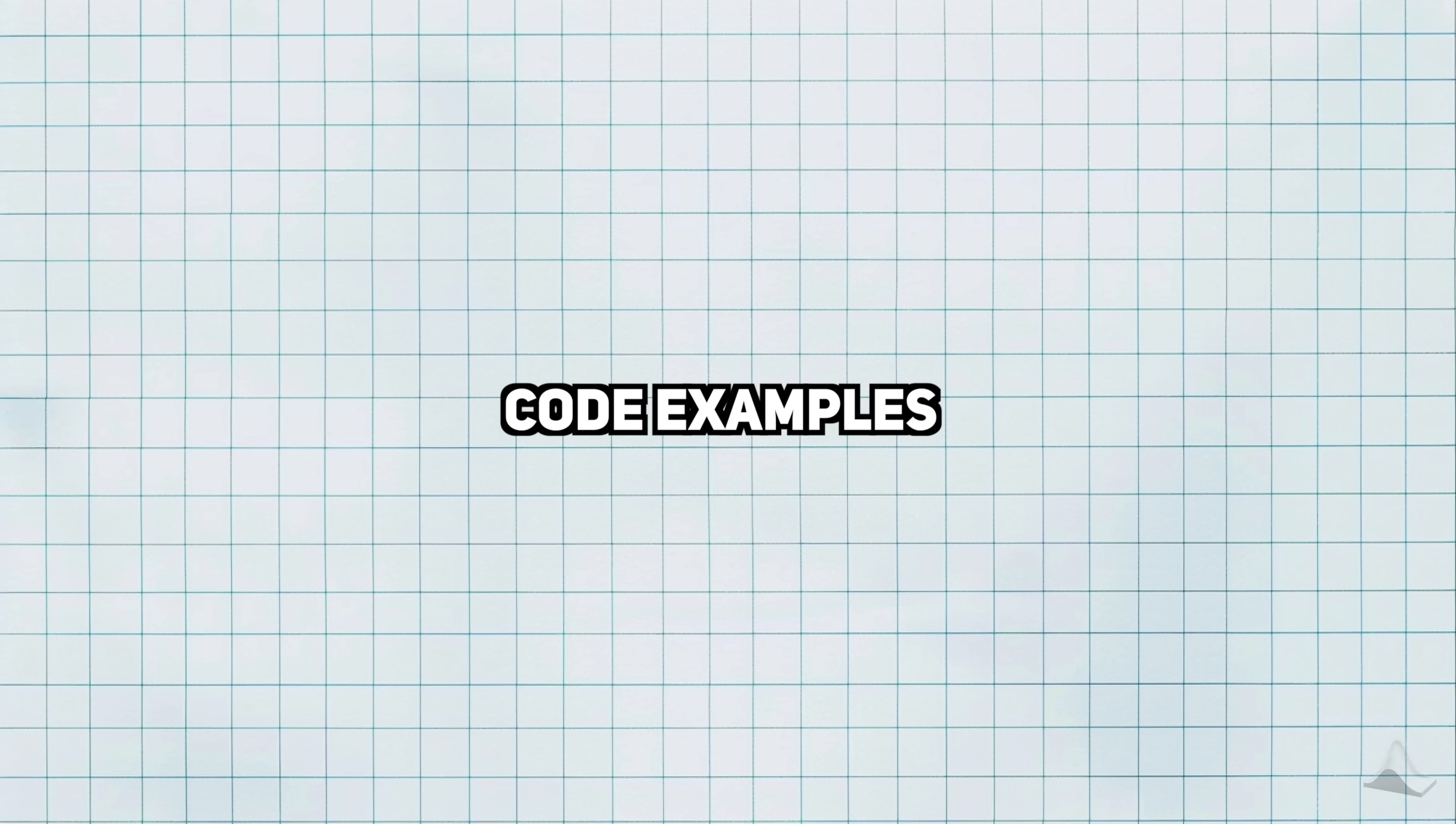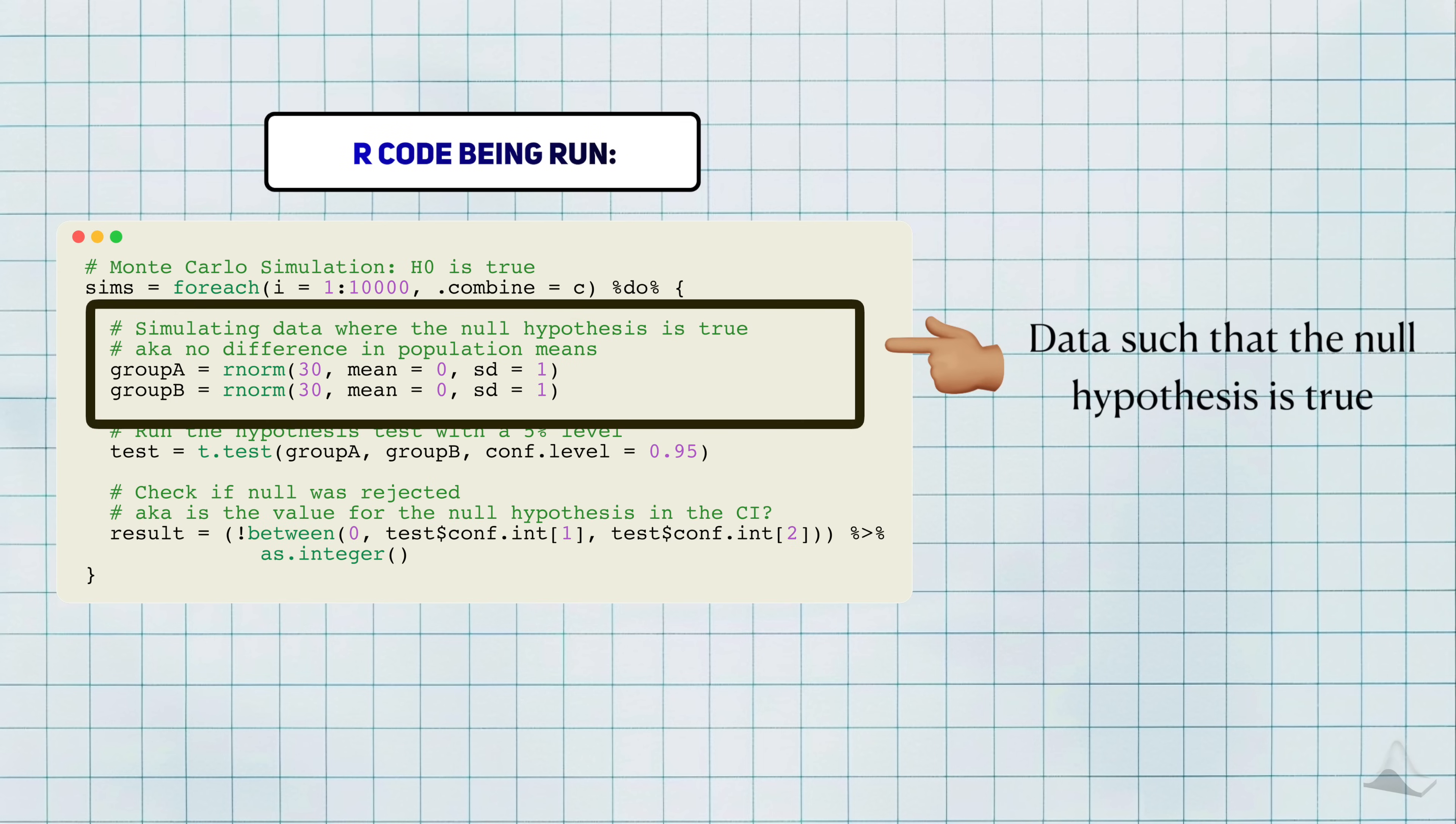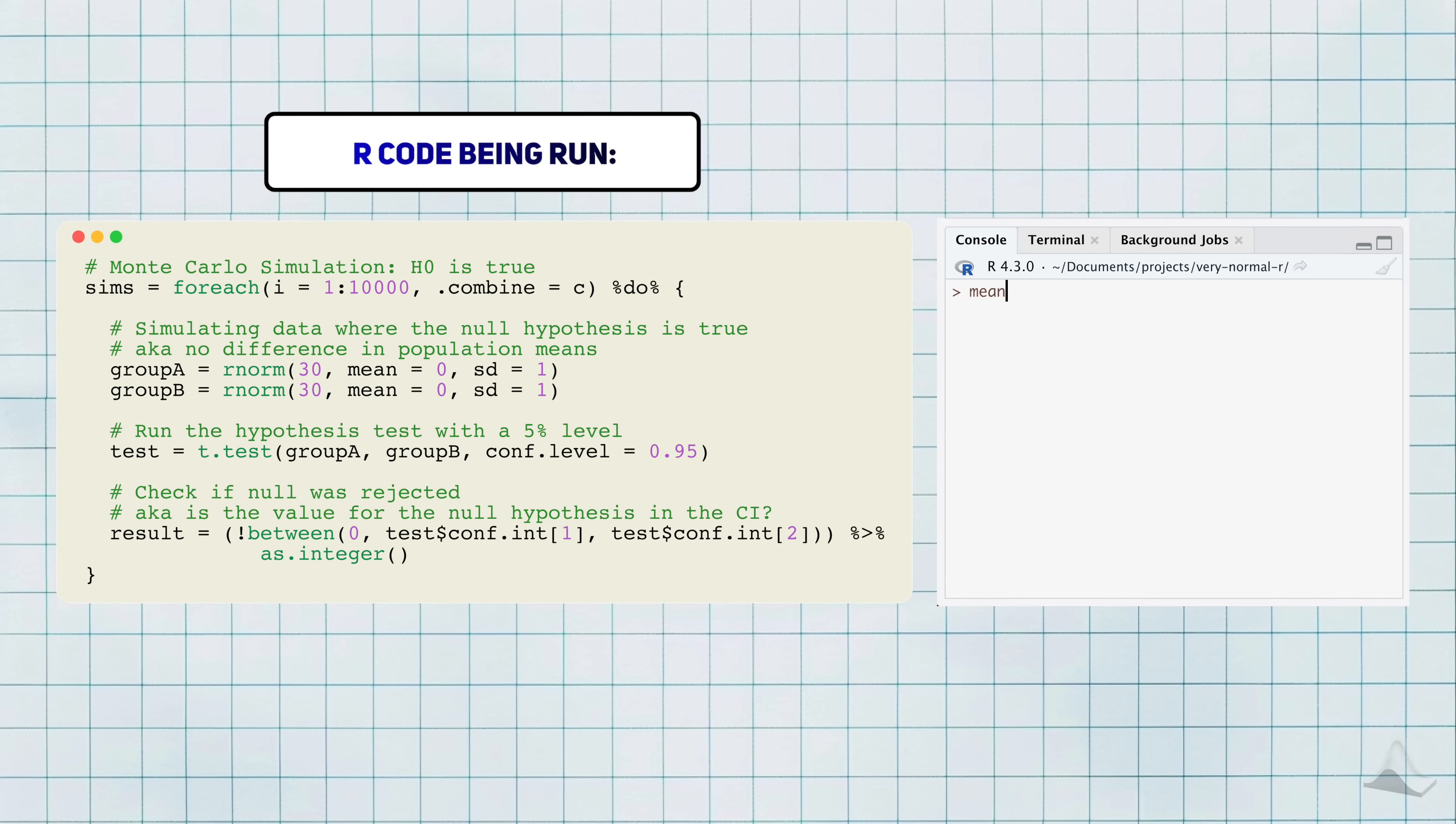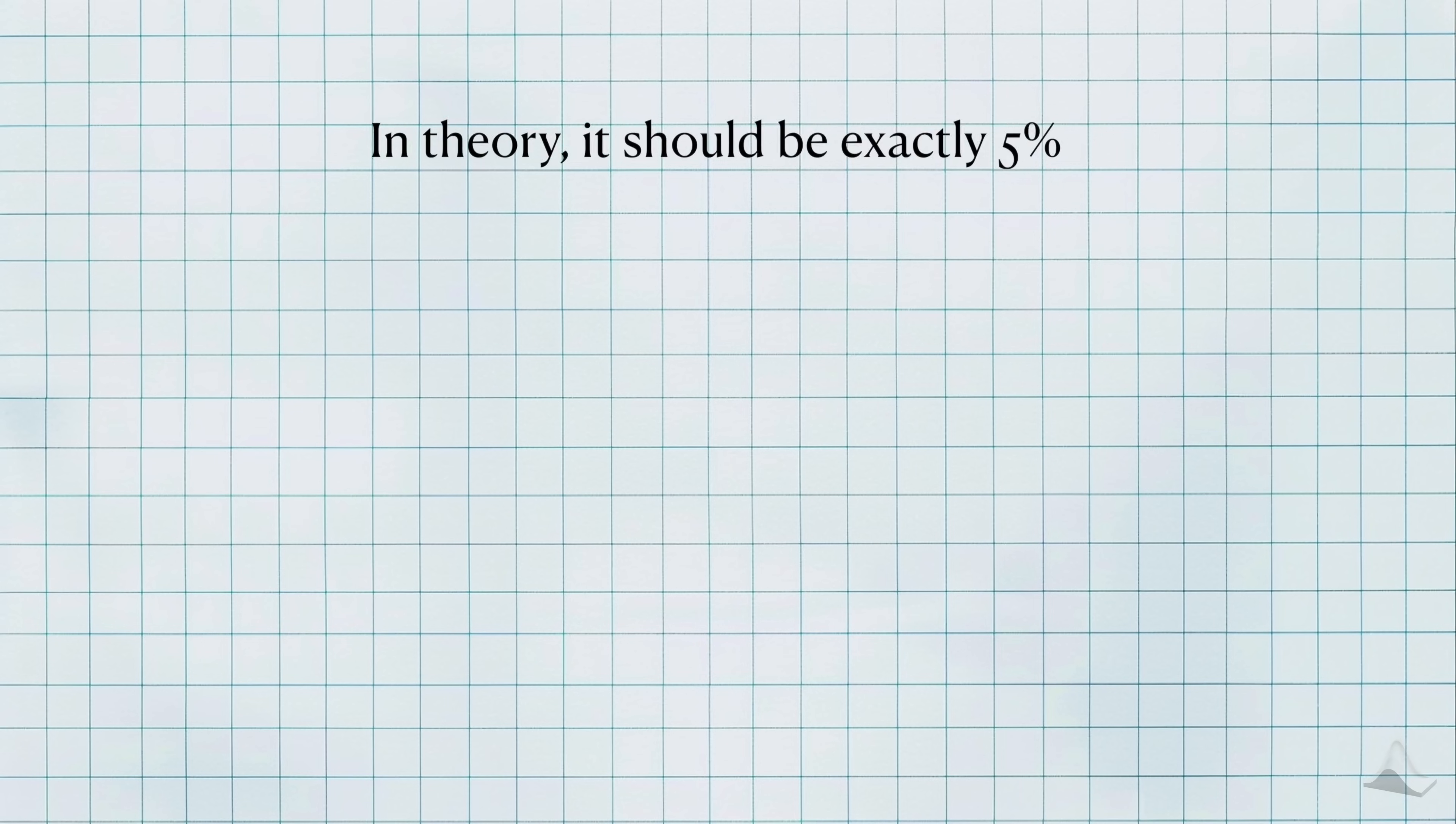We're going to go through a series of three examples, each with their own point to make. As a first example, I'll generate data such that there's no difference between the population means of two groups. And I'll generate 30 observations for each group. I'll run all the simulations and collect all of our indicator variables. When I calculate the sample mean, I get a value of .0466. This proportion tells us that 4.6% of the simulations rejected the null hypothesis, conditioned on the null hypothesis being true.